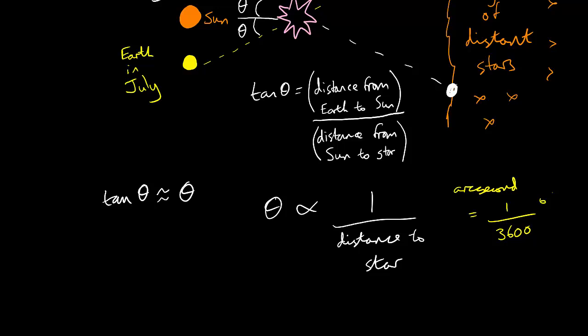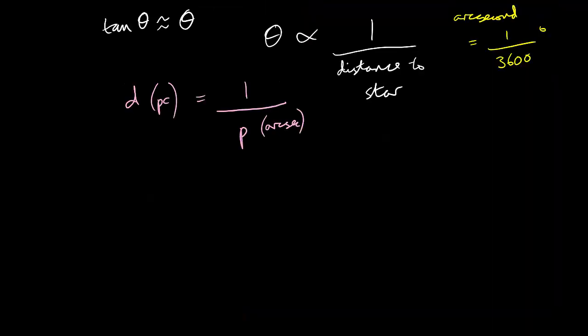thousand six hundred of a degree, this corresponds to a distance of one parsec. The word parsec is short for parallax of one arc second. This leaves us with the simple equation: d in parsecs is equal to one